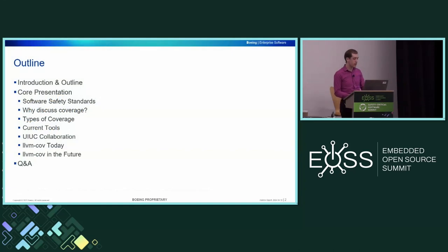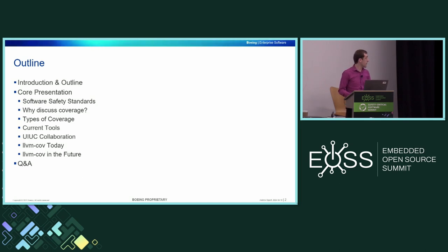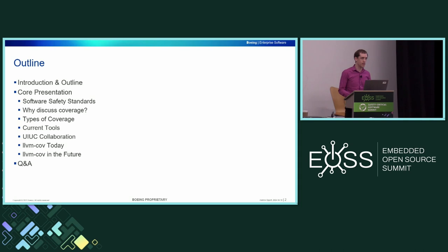Quick overview: we're going to talk about what the safety standards are, why discuss code coverage at all, the types of code coverage that there are — because there's a handful of types — what tools exist today to measure those, and then some work that we've done with the University of Illinois to enhance some open source tools to do this for us instead of the commercial tools. A little spoiler: we'll be talking about LLVM-COV today and where we see it going in the future.